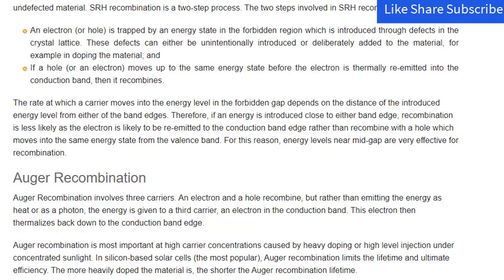In silicon-based solar cells, Auger recombination limits the lifetime and ultimate efficiency. The more heavily doped the material is, the shorter the Auger recombination lifetime.